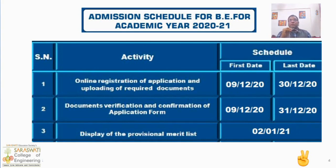Non-CAP students will not get the scholarship from the government. So hope you all did that part. Then simultaneously, document verification is also done at SCs. After registration, the Provisional Merit List will be displayed on 2nd January 2021. You can see that 2nd January is the date for displaying the Provisional Merit List.